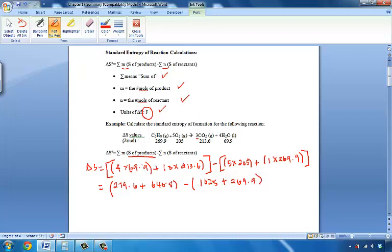And we take, then, the difference here. The sum of all of our products is 920.4. The sum of all of our reactants is 1294.9. And when we finally take the difference of that, delta S will equal a negative 374.5 value.